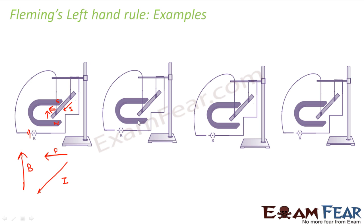In the second scenario, the current direction remains the same but the poles of the magnet are reversed, making the magnetic field point downward. Now point your first finger downward and orient your middle finger along the current. Your thumb points to the right, so the rod displaces to the right — confirming that reversing the direction of the magnetic field reverses the direction of force.